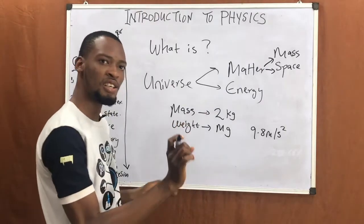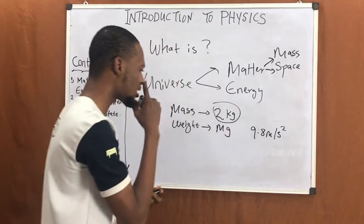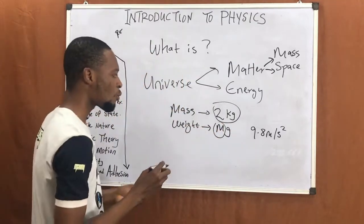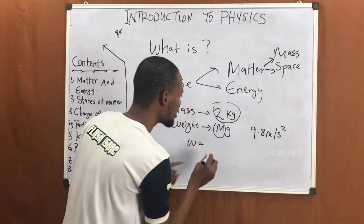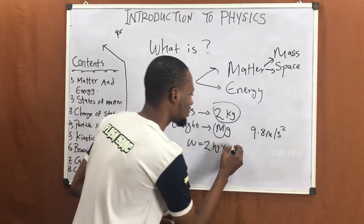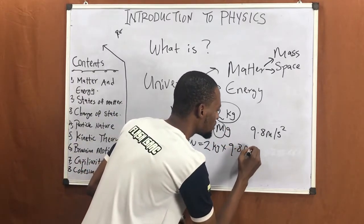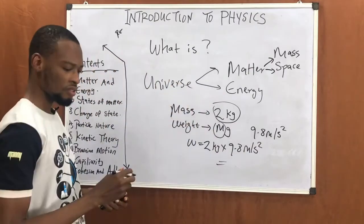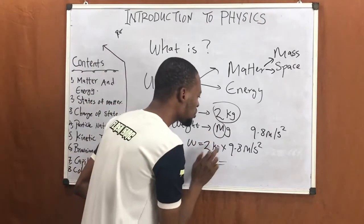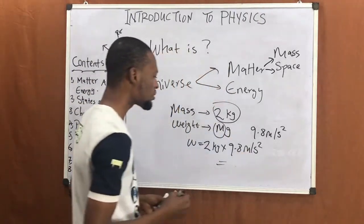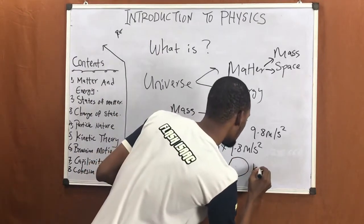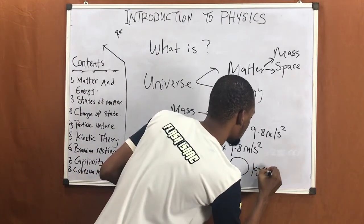This implies that the body, or an object with mass 2 kg, has weight W equals mass 2 times gravity 9.8 meters per second squared. So if you multiply 2 times 9.8, you get the weight of the body. The unit is kilogram meter per second squared, or Newton.